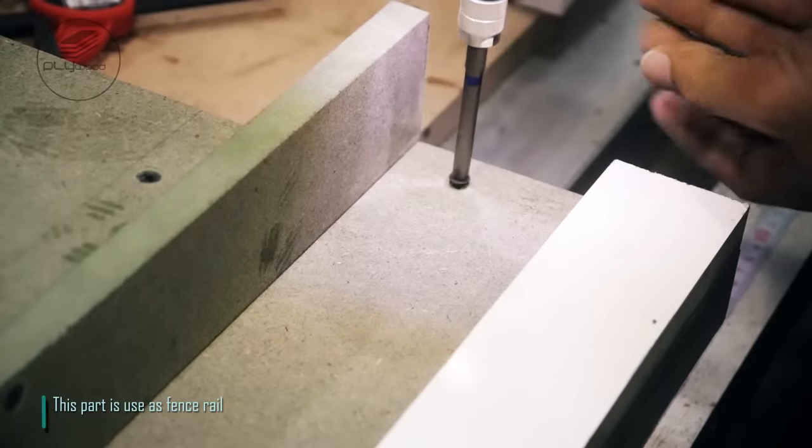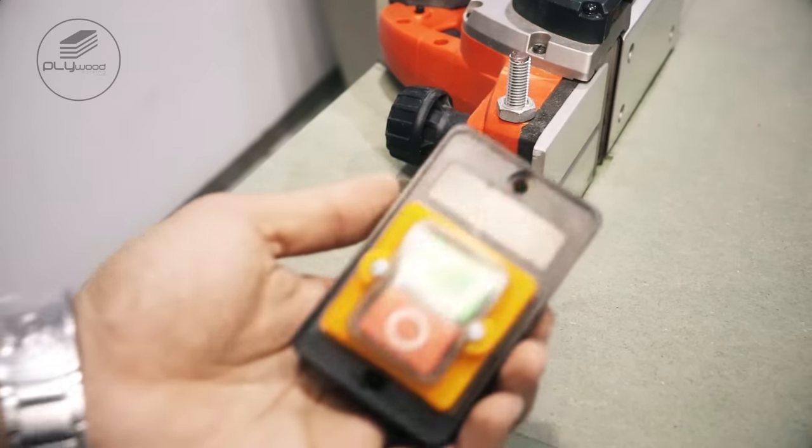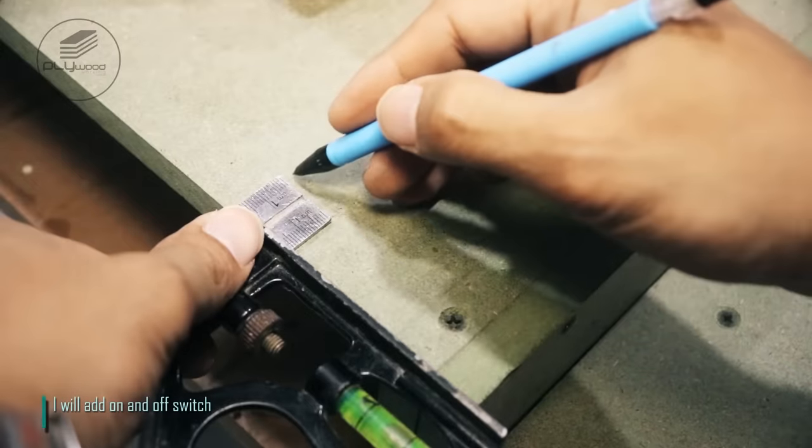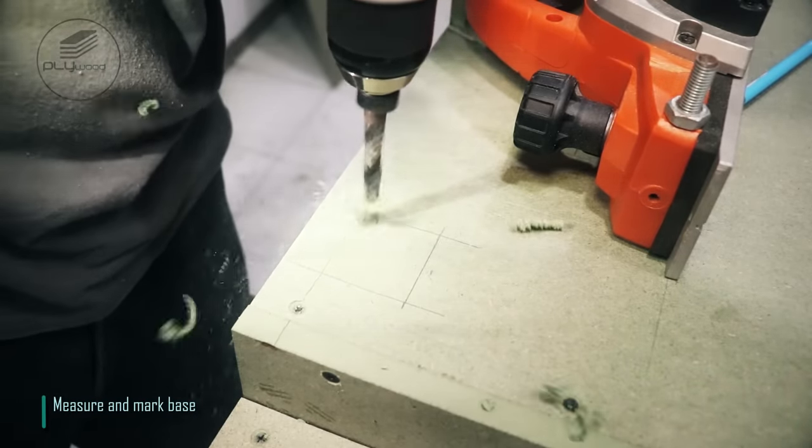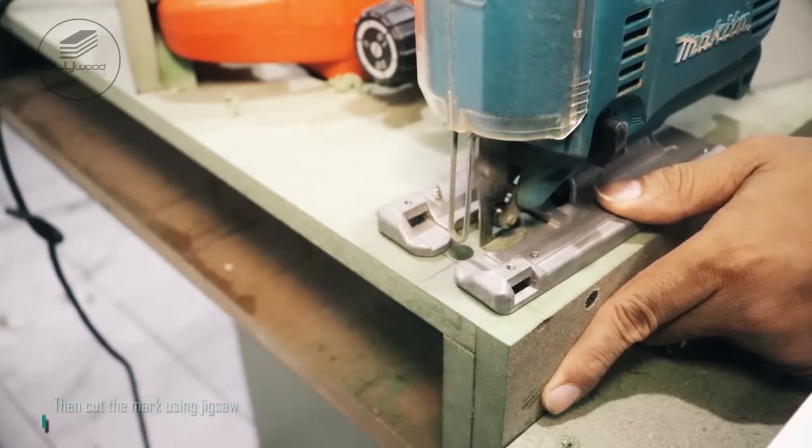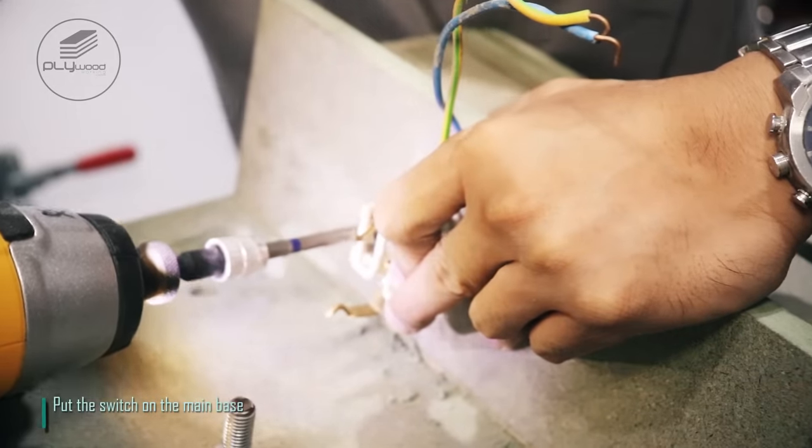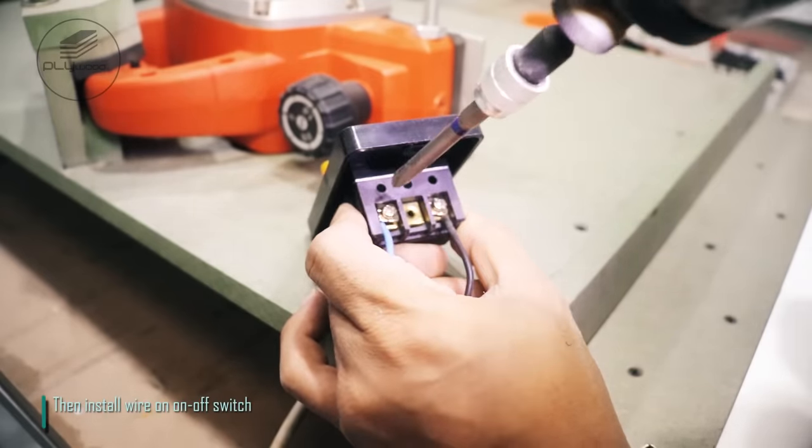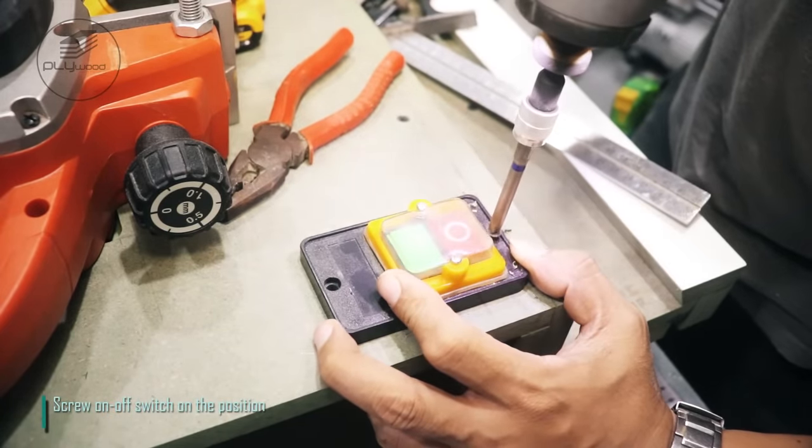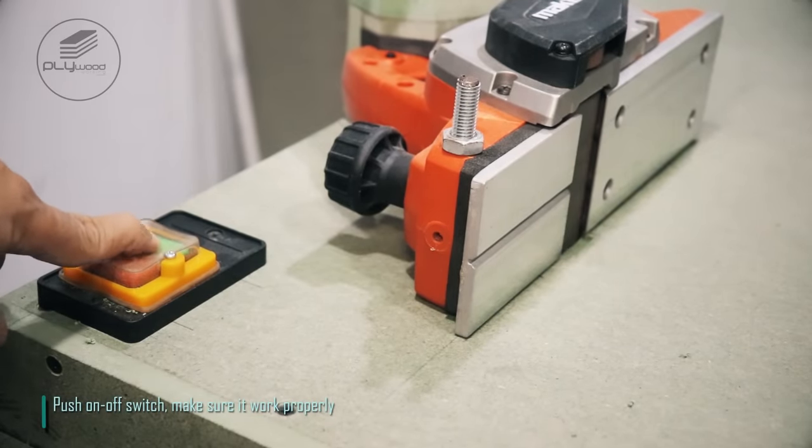This part is used as fence rail. I will add on and off switch. Measure and mark base and cut the mark using jigsaw. Put the switch on the main base. Then install wire on on off switch. Screw on off switch on the position. Push on off switch make sure it worked properly.